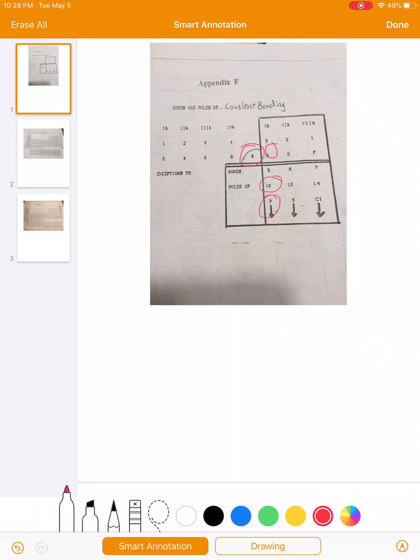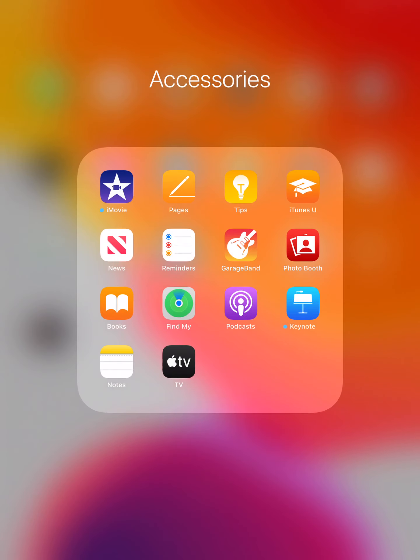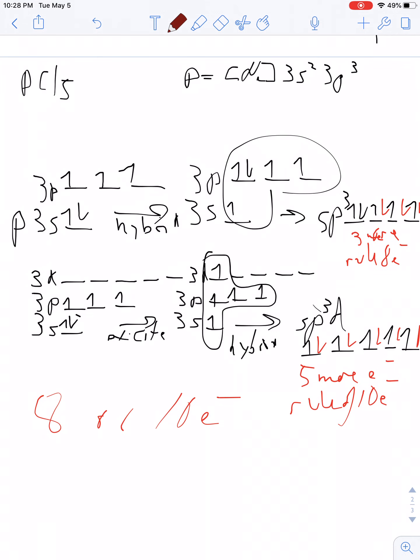Why can't nitrogen follow the rule of 10? Why does nitrogen have to follow the rule of 8? Phosphorus can follow the rule of 10 or the rule of 8, but nitrogen can only follow the rule of 8. Well, the reason why that is, is because phosphorus can access the D orbitals. Nitrogen does not have D orbitals. Why? Because nitrogen is in the second energy level. And in the second energy level, there are no 2Ds. So nitrogen can only follow the rule of 8.